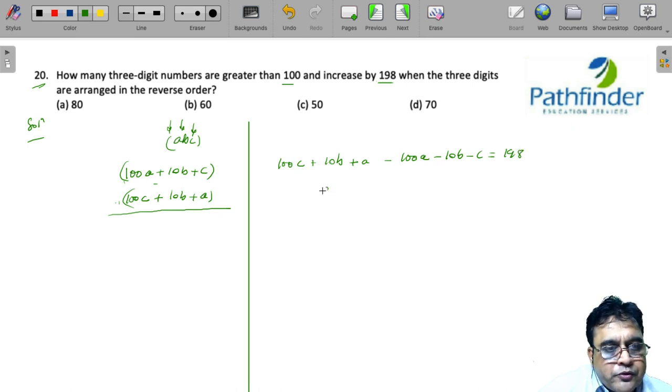So when you solve this, you will get 99(c - a) = 198, or c - a = 2.